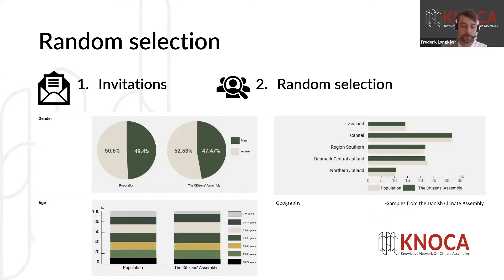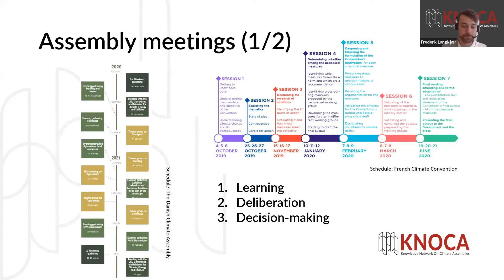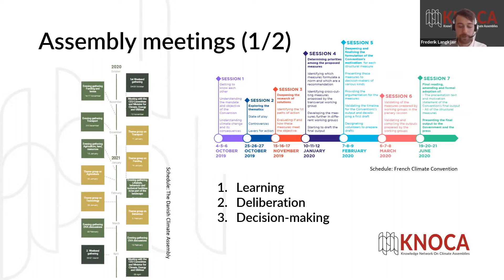When you have your citizens, it's time to get started. Here are two examples — one from Denmark and one from France — of how an assembly meeting flow can be structured. The Danish example is from the first phase of the climate assembly, which took place entirely online, and was a combination of weekend plenaries, thematic evening plenaries, and smaller theme group evening meetings. The French assembly was originally structured as a series of seven face-to-face weekend meetings, but was given one additional online weekend. The three main components of assembly meetings are learning, deliberation, and decision-making.